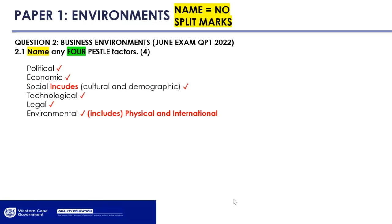It's important to understand the cognitive verbs we use in our questions. Name, state, and list are lower-order verbs and will always come with asking you for a particular number of facts. If we ask you for four personal factors, we will only mark the first four — we will not even look at number five or six. Name carries no split marks; you get one mark for each fact. Social includes cultural and demographics, so you'll just get one mark. Environmental also includes physical and international — just one mark even if you list all of that.